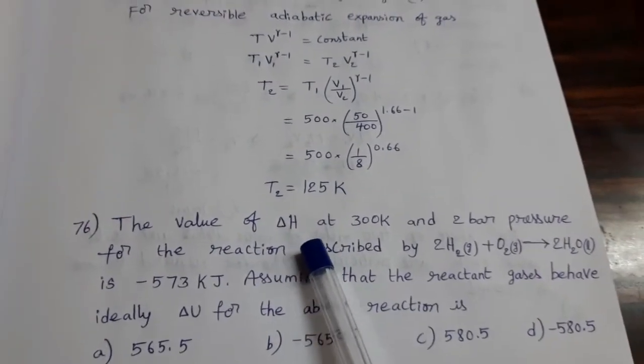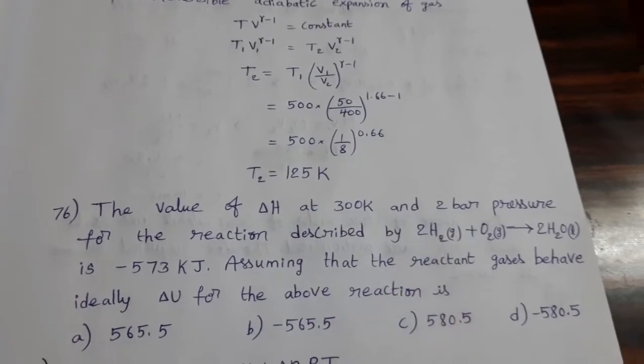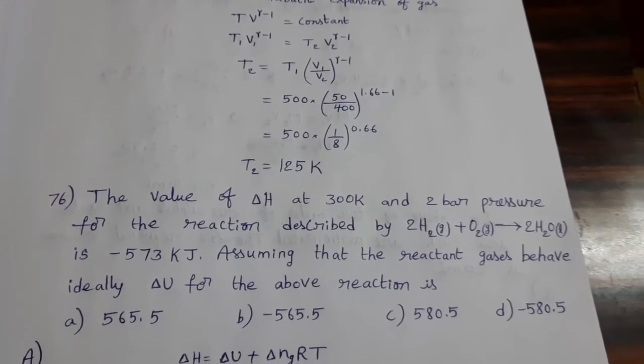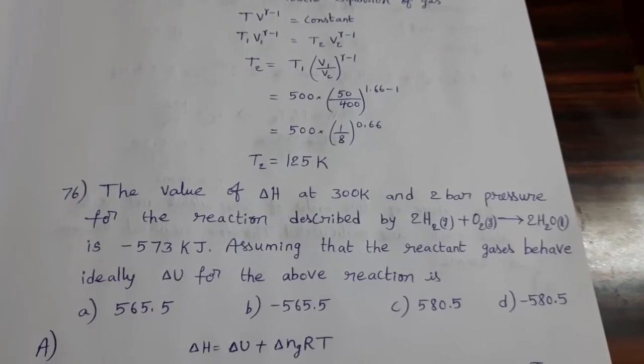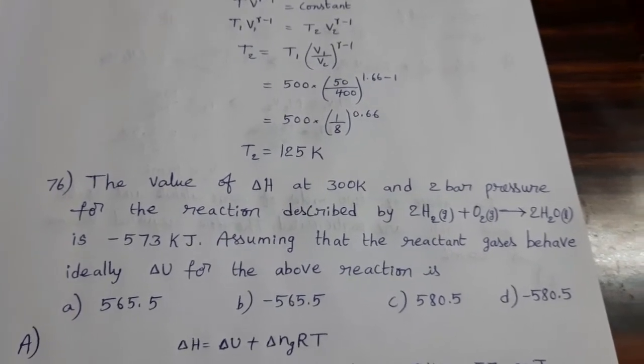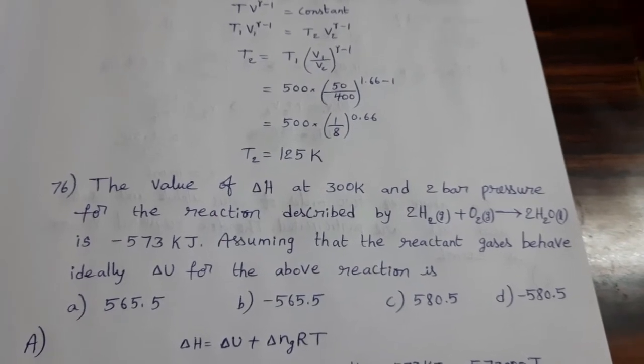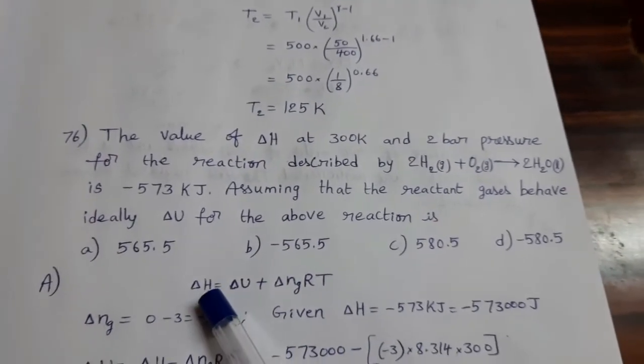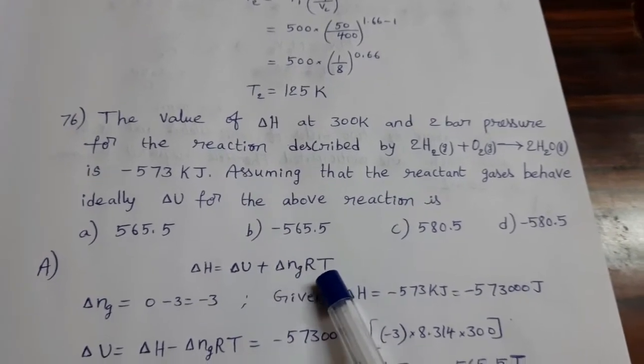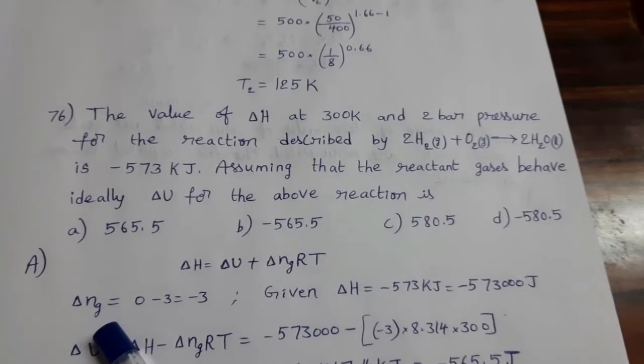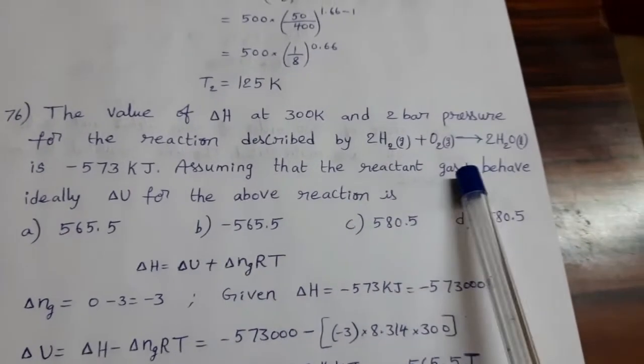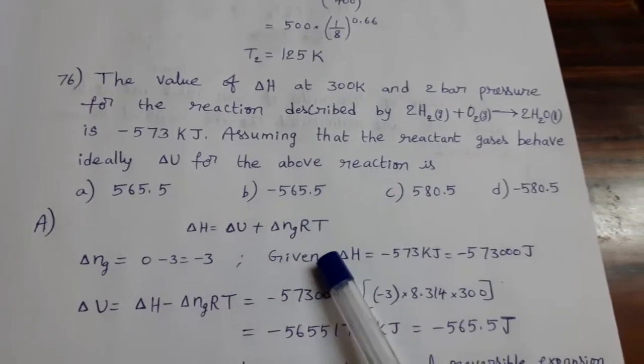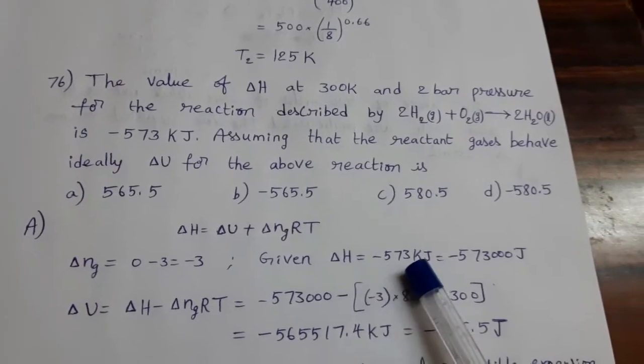The value of delta H at 300 Kelvin and 2 bar pressure for the reaction 2H2 + O2 gives 2H2O in liquid state is minus 573 kJ, assuming that the reactant gases behave ideally. Delta U for the above reaction, change in internal energy, we should find out. Delta H = delta U + delta NG·RT. Here delta NG means difference in the number of moles of products and reactants. Product is in liquid state, we have to consider zero. Zero minus two plus one, so zero minus three equals minus three.